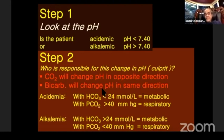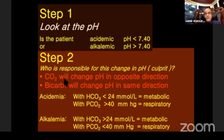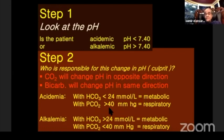The primary disorder and the compensatory effect: same direction is metabolic, opposite direction is respiratory. Acidemia with HCO3 less than 24 is metabolic acidemia. With arterial CO2 more than 40, it is respiratory acidemia. With HCO3 more than 24, it is metabolic alkalemia.